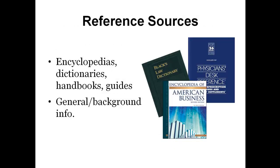Reference sources such as encyclopedias, dictionaries, handbooks, or guides are good places to start when you know very little about your topic or need some background information. Because articles and reference sources are usually short, they will quickly provide you with an overview on a topic and allow you to identify keywords, which can be used when you are searching for more information on your topic.